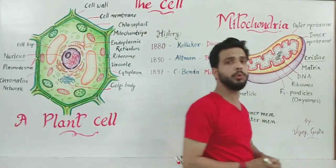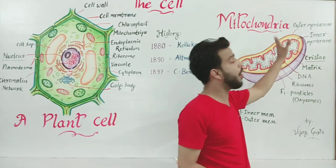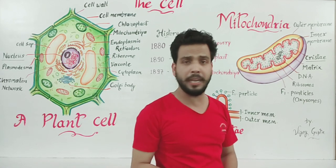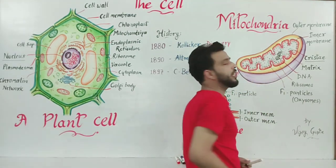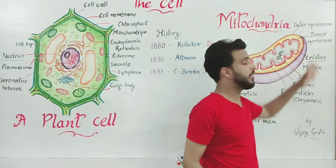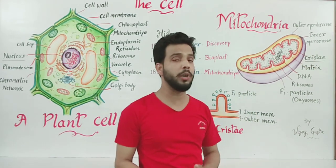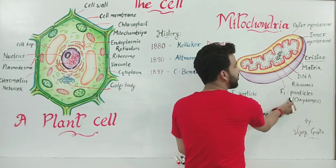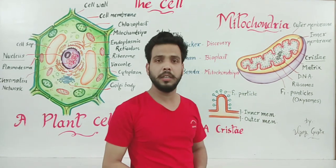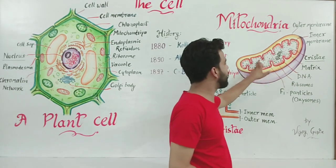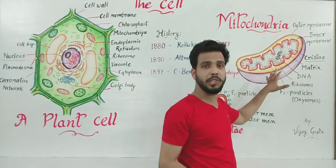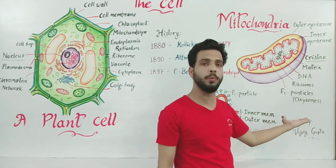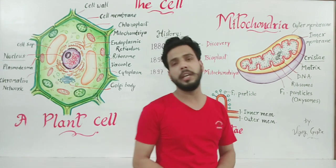As I told you, there are total two membranes. The outer one is known as outer membrane, while the inner is known as inner membrane. And the inner membrane produces finger-like projections which are termed as cristae. This plays a very important role in the production of energy. On the corners of cristae, F1 particles or oxysomes are present. These tiny particles play a very important role in energy production.